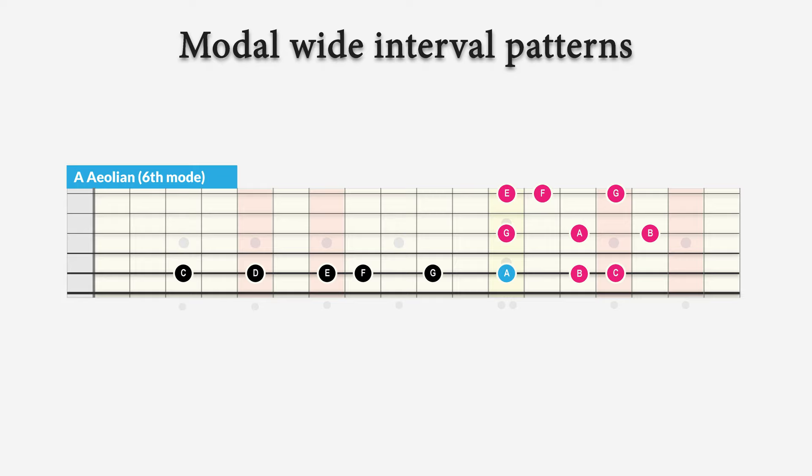Now starting on the sixth note of the C major scale, we'll get an A Aeolian mode. And this mode is equal to the natural minor scale, and we play this over an A minor 7 chord.